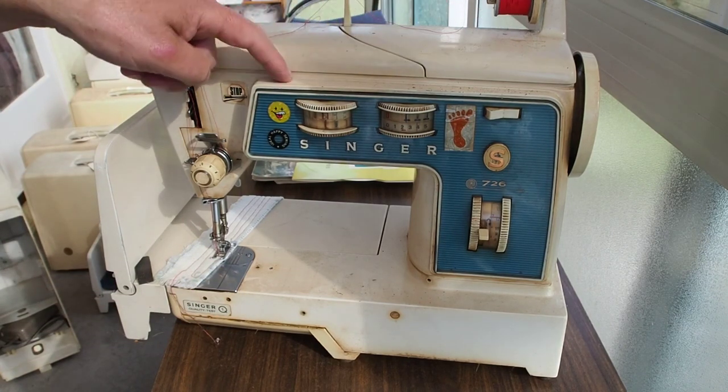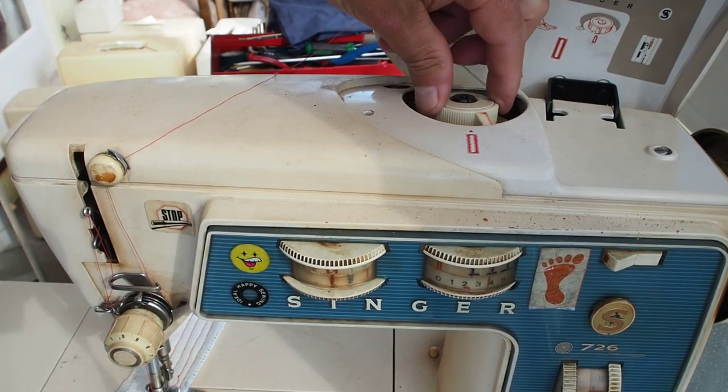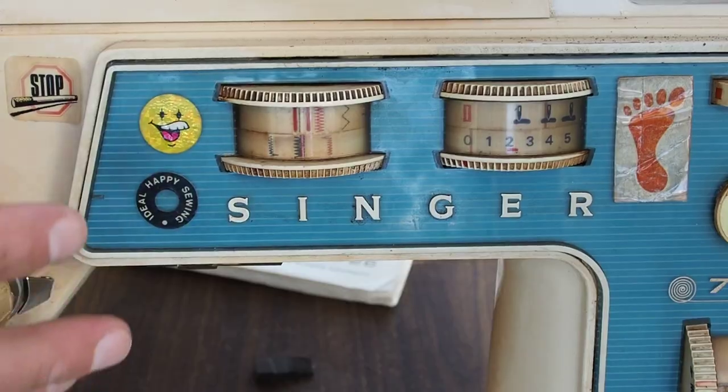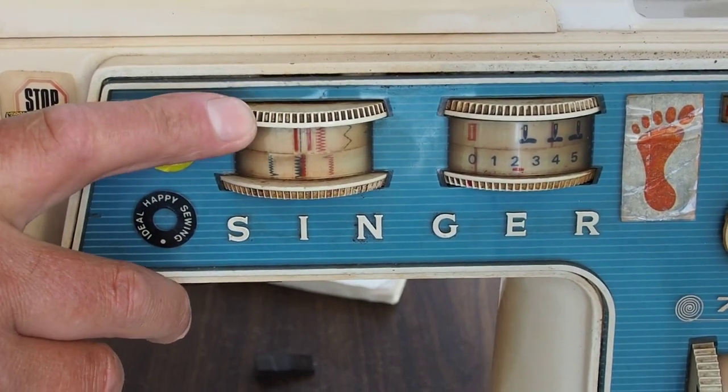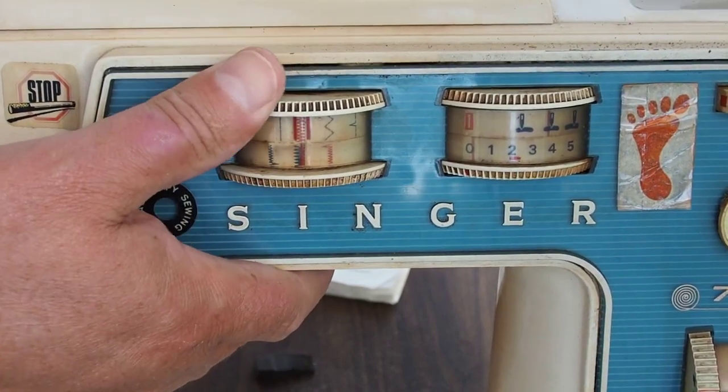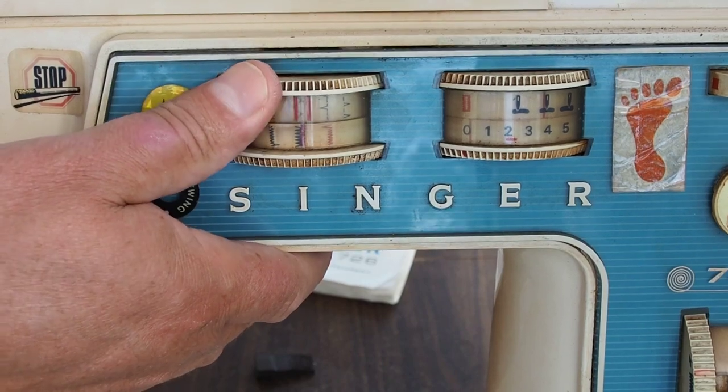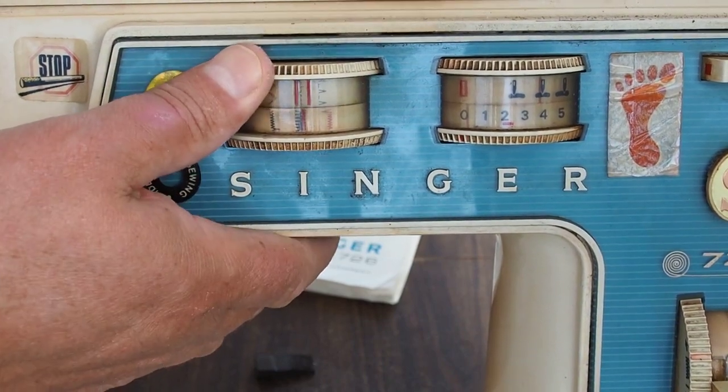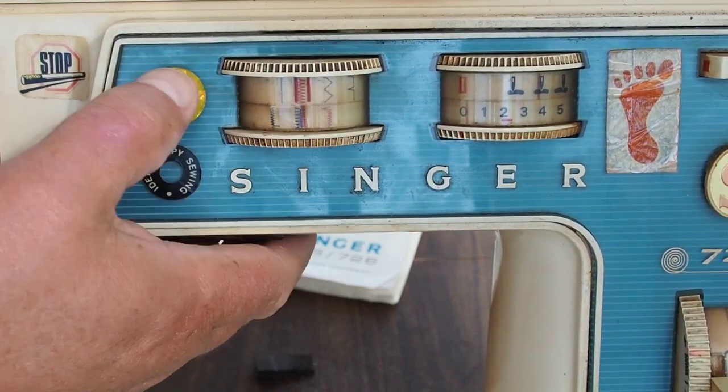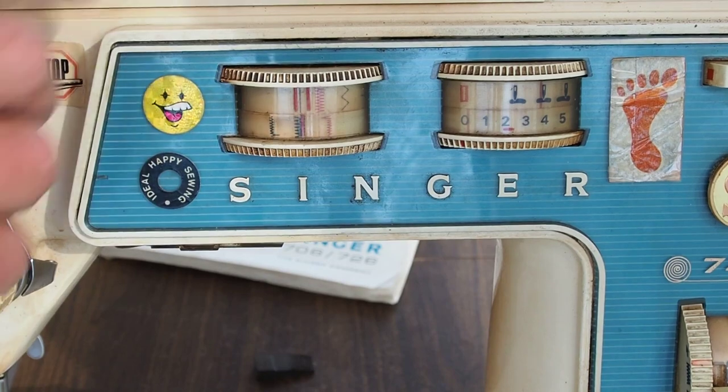This is all metal, so it's not like the plastics are yellowing. The 726 - you can't remove the buttonhole attachment, it's locked in there. You can't replace cams in this machine, so you're really limited to the built-in patterns here. We've got straight stitch, zigzag, a tricot stitch, a blind hemming type stitch, and another sort of blind hemming or overcasting type stitch. That's the extent of the stitch selections on the 726, and of course buttonholing.